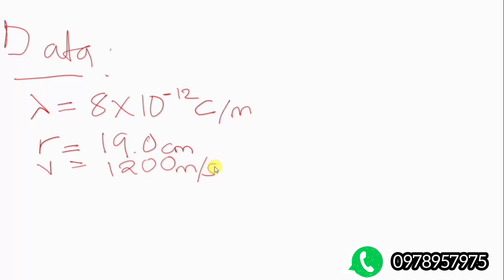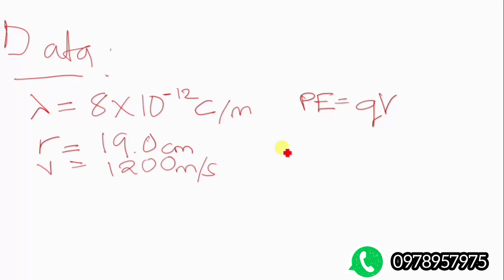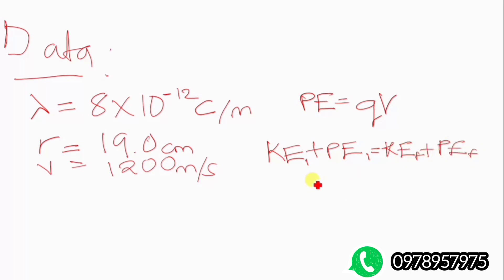We also have the speed, which is our velocity equal to 1200 meters per second. There are a few formulas we need to understand. The potential energy when dealing with charges is the charge times the voltage. The other equation is the conservation of energy: KE initial plus PE initial equals KE final plus PE final — meaning energy at the start equals energy at the end; no energy is lost or gained.